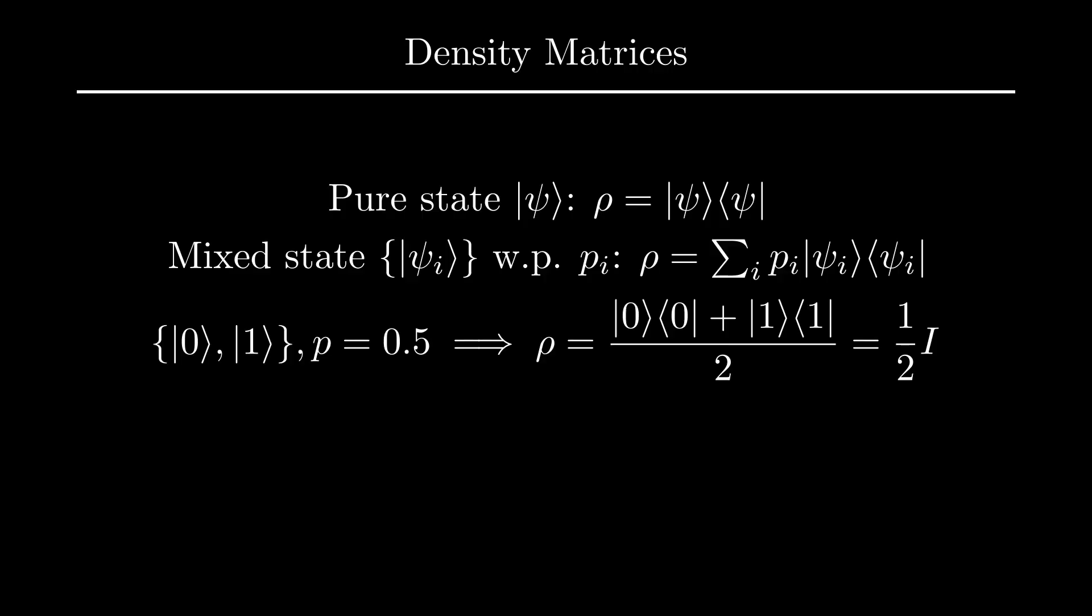You may notice that this density matrix is actually a multiple of the identity. Density matrices that are proportional to the identity matrix correspond to maximally mixed states. This means that we effectively have no information about what the state of the system could be, regardless of how we measure the system.